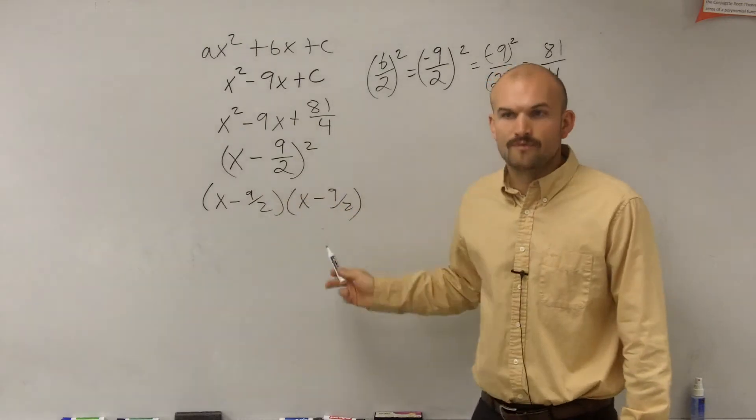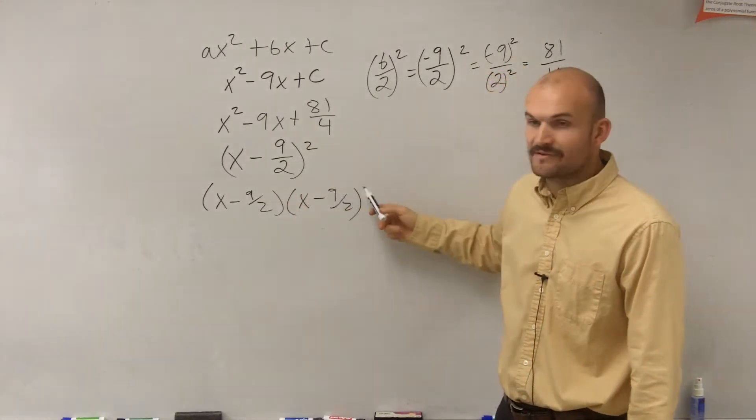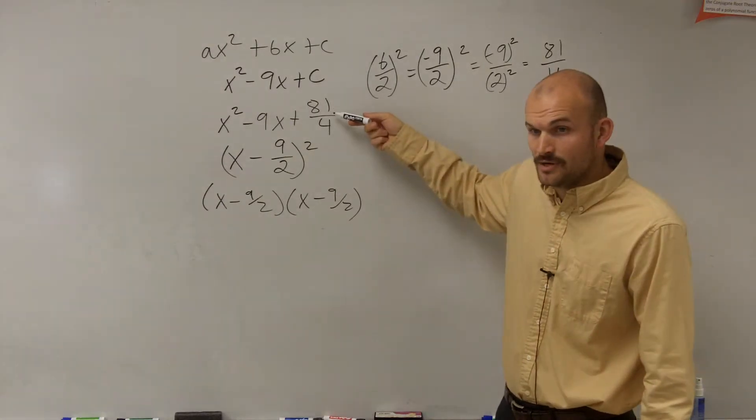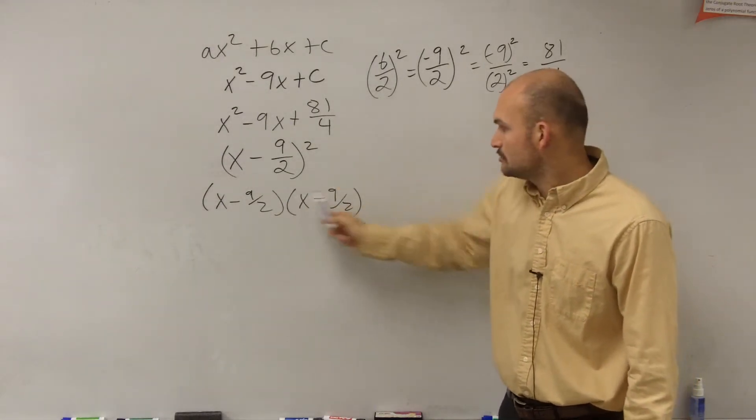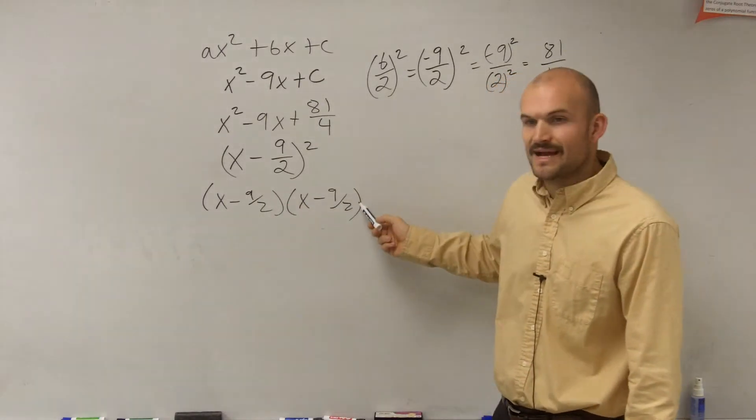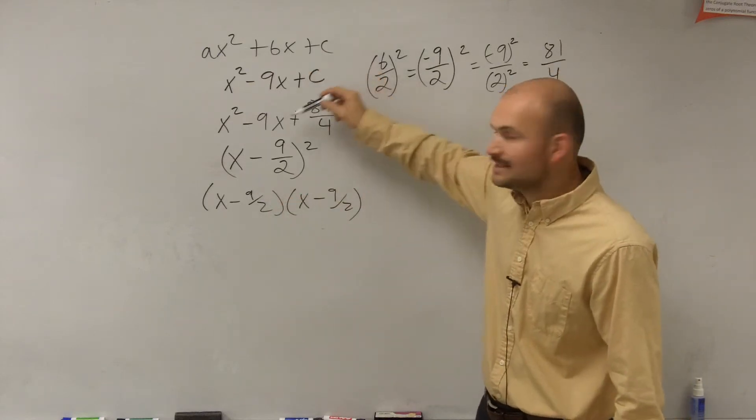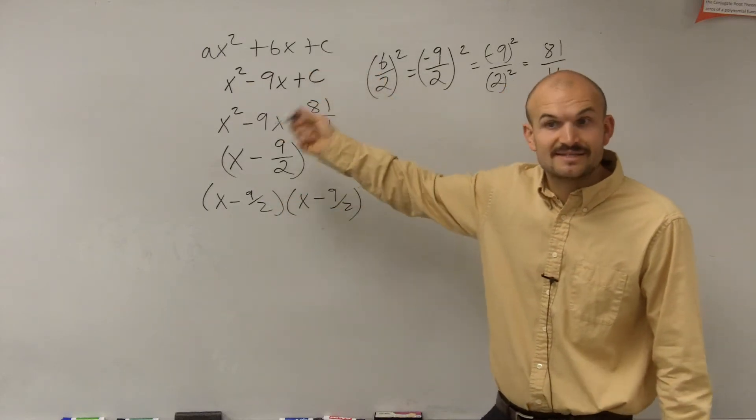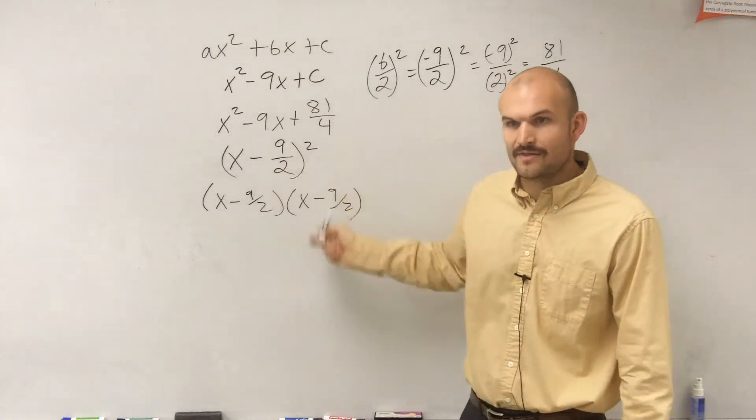Try to do a little FOIL in your head. What's negative 9 halves times negative 9 halves? Is it 81 over 4? Yeah, negative 9 times negative 9 is 81, 2 times 2 would be 4. Negative 9 halves plus negative 9 halves, same denominator, add the numerator. And what you'll get is negative 18 halves. Negative 18 divided by 2 is negative 9. See how that works?